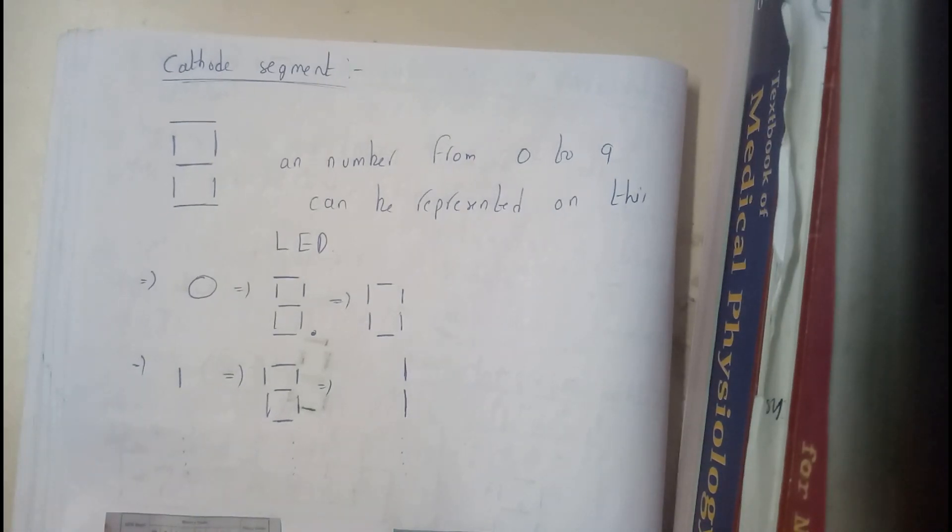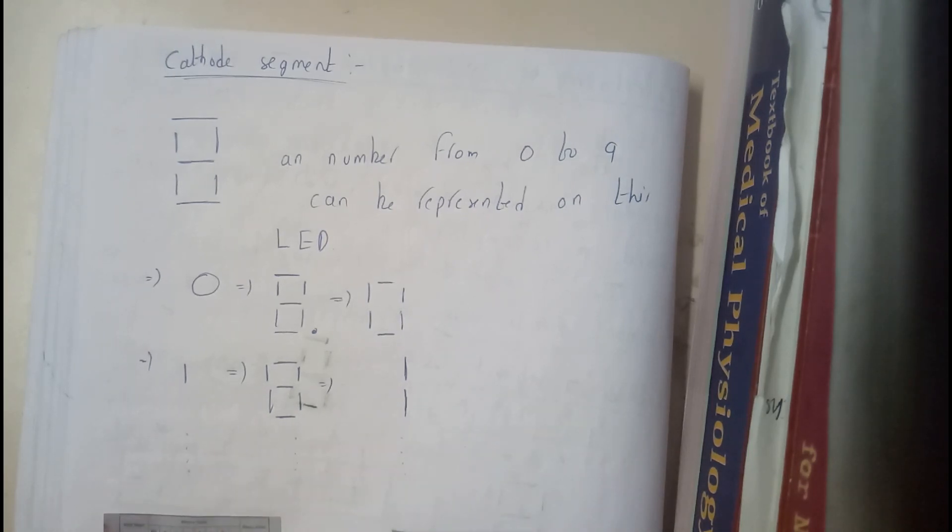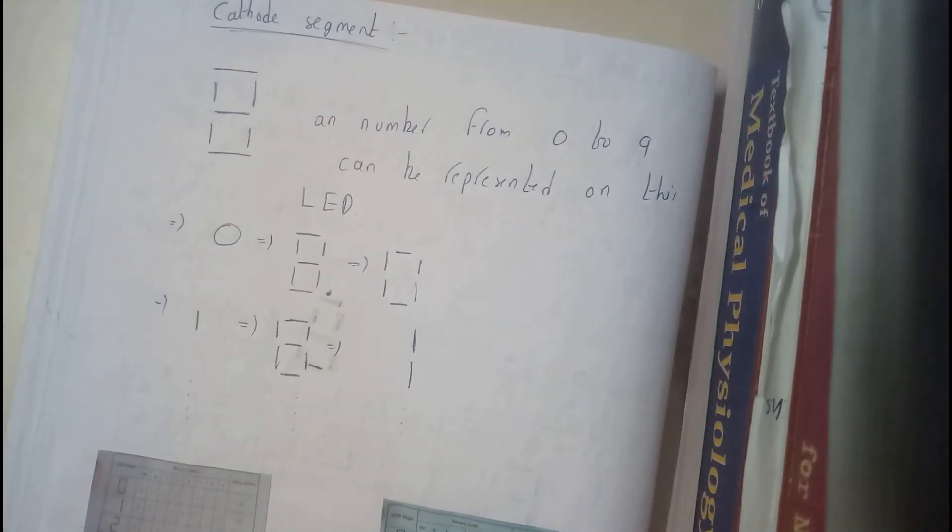Okay guys, sorry for that interruption. So now let us continue our lecture. Basically we previously discussed how the cathode and anode seven segment display looks like. So now let us go in detail through it. Basically cathode segment and we are having anode segment also. This is symbol and number from zero to nine.